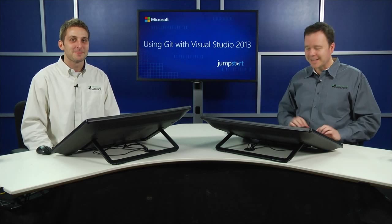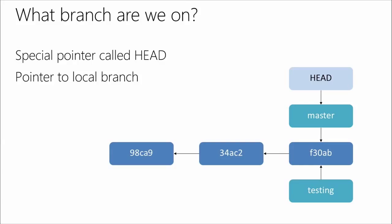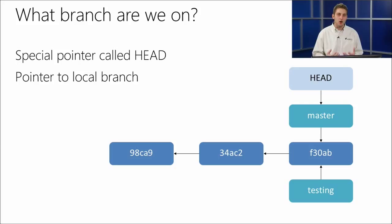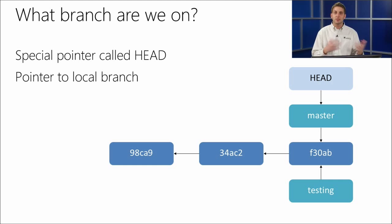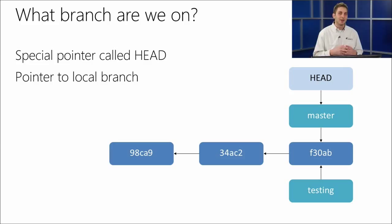Now there's a special pointer called HEAD. HEAD is literally where we are personally on our local machine. Right now we have master checked out, so that's where HEAD is pointing. If we were to check out testing, HEAD would stop pointing at master and start pointing at testing. Most of the time you want HEAD pointed at a branch rather than pointing at a commit.